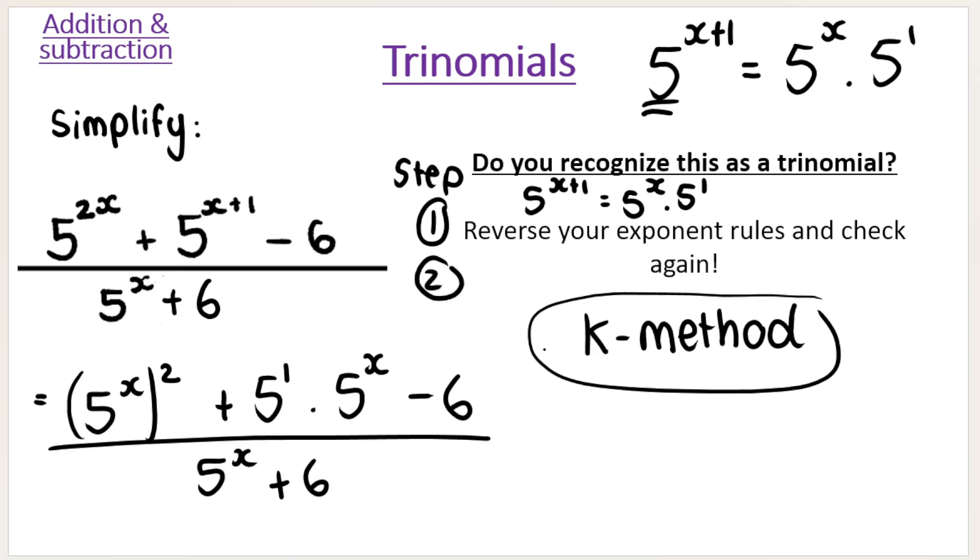Then step 2 is you are going to use the K method. You are going to let, let 5 to the power of X equal K. Now, how did I know to choose 5 to the power of X? Easy way you can think about it is it'll always be the middle term, 5 to the power of X. It'll always be the middle term.